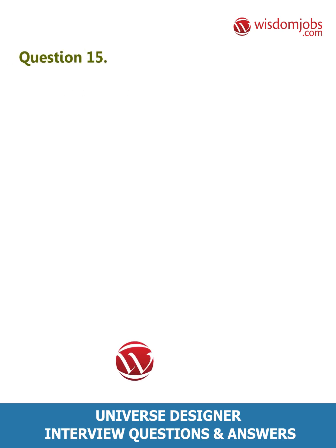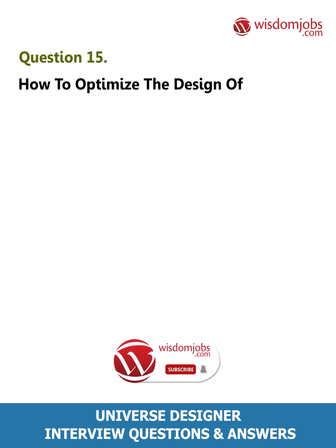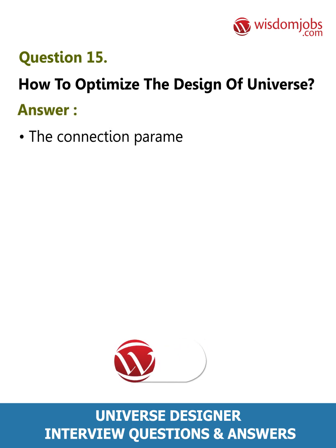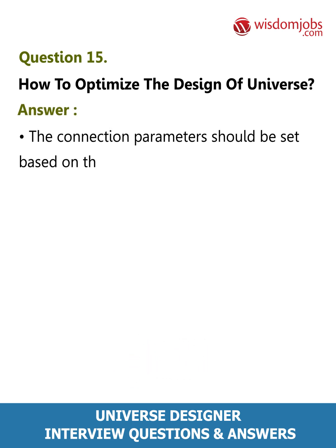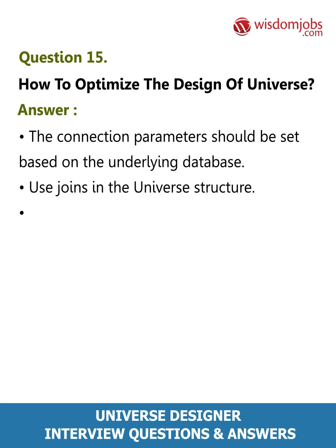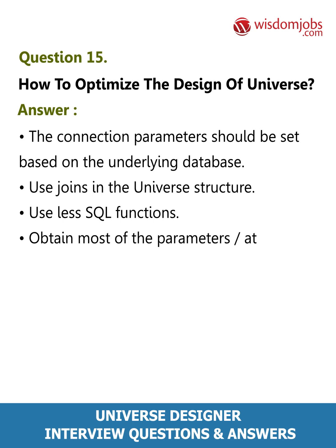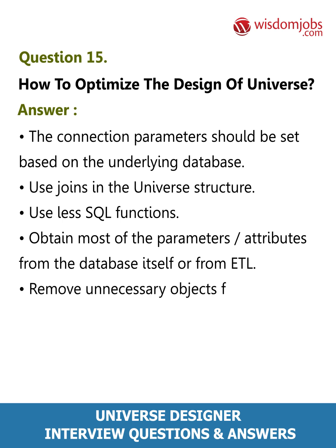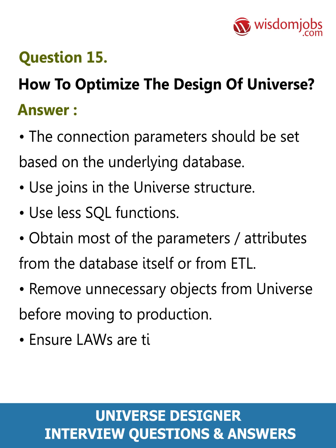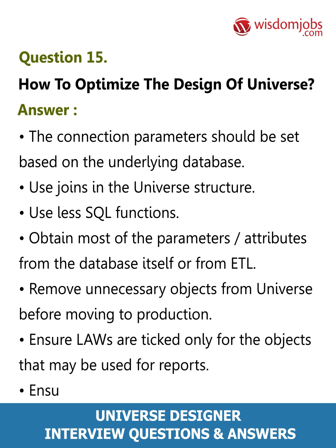Question 15: How to optimize the design of a universe? Answer: Connection parameters should be set based on the underlying database. Use joins in the universe structure and fewer SQL functions. Obtain most parameter attributes from the database itself or from ETL. Remove unnecessary objects from the universe before moving to production. Ensure LOVs are ticked only for objects used in reports, and ensure data prompts are properly defined.